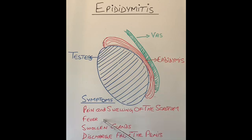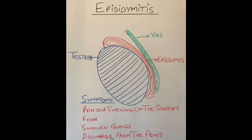They also get fever because it's an infection in most patients. They also get swollen glands in the groin, in the armpit, or even in the neck. They sometimes also get discharge from the penis. The discharge is usually either very pussy in colour, yellow in colour, or even green in colour, especially if it's because of gonorrhea.